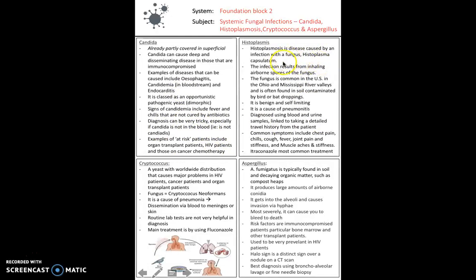Histoplasmosis is a disease caused by the fungus Histoplasma capsulatum, resulting from inhaling airborne spores. It's quite common in the US near the Ohio and Mississippi Rivers due to soil contaminated by bat and bird droppings. It causes chest pain, chills, coughs, and fevers. Not very common in the United Kingdom.